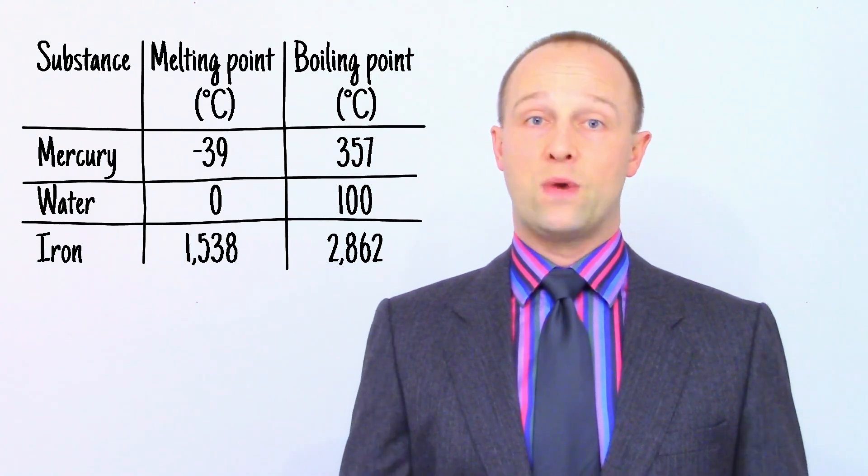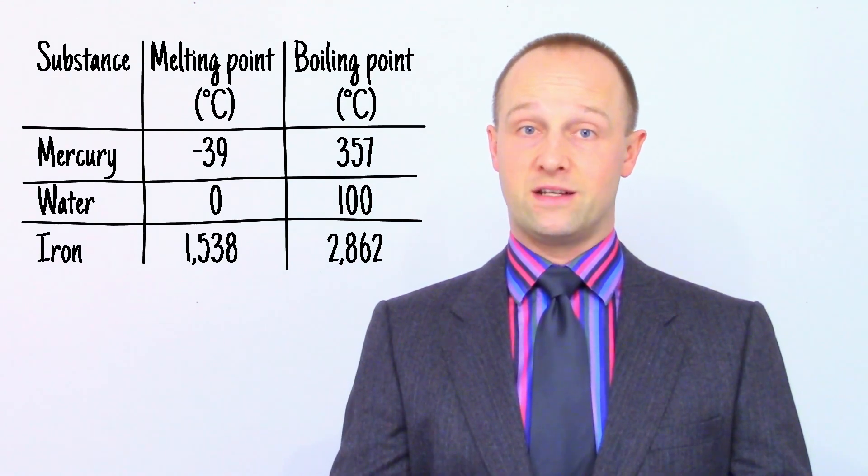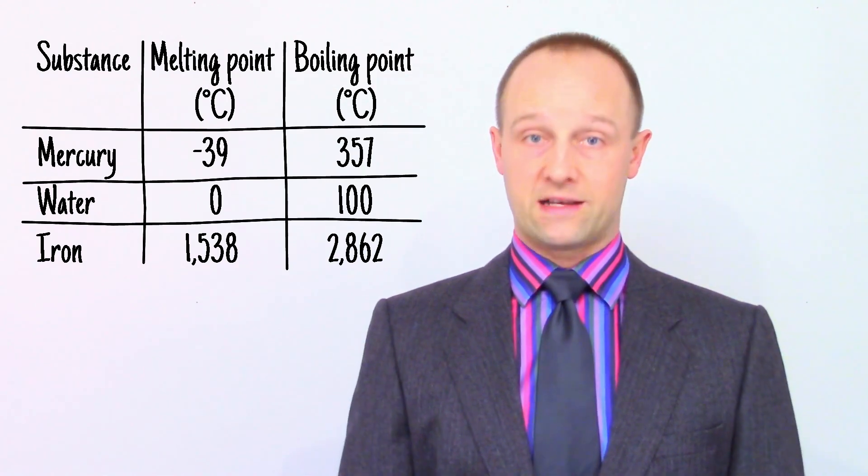If we raise the temperature to 2,000 degrees Celsius, finally the iron has melted and is a liquid. And we're well above the boiling point of mercury and water and they're both gases now.